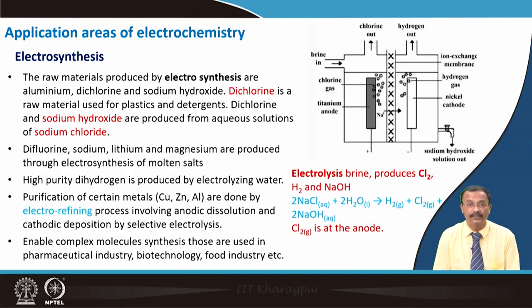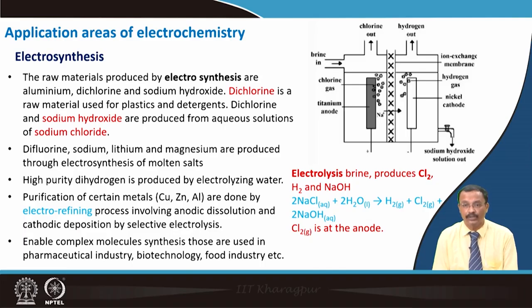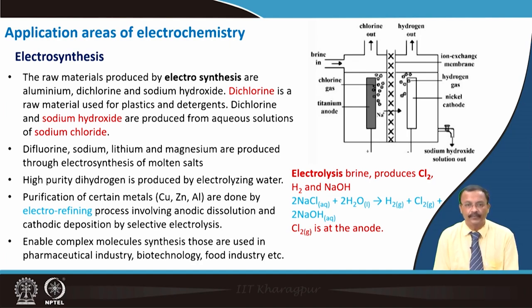Apart from that, purification of certain metals — in particular copper, zinc, and aluminium — is done by a process called electrorefining, where one of the ores is used as the anode and the purified metal is deposited on the cathode. Additionally, electrosynthesis enables complex molecule synthesis, which is particularly useful for pharmaceutical industries, biotechnology, and food industries.